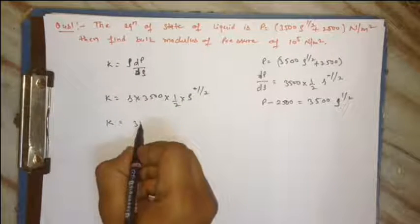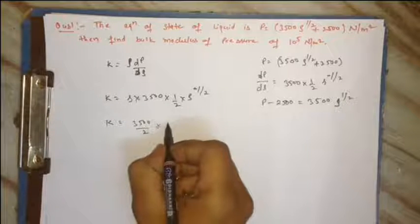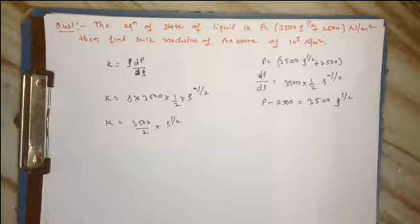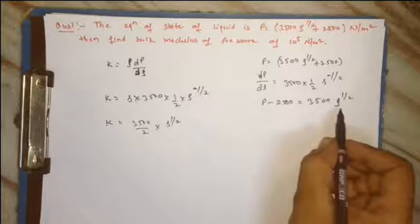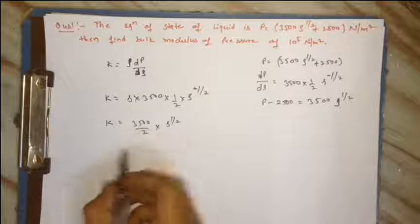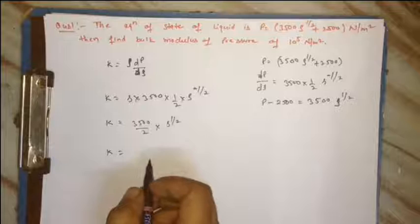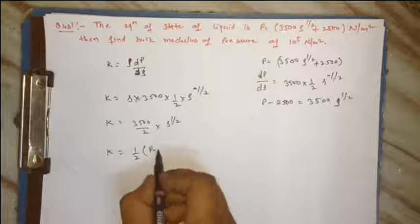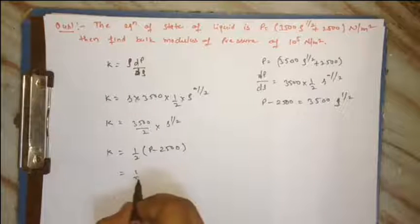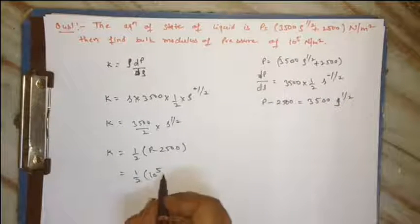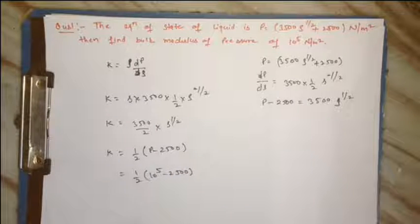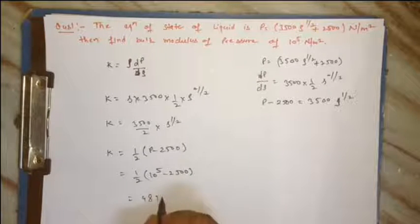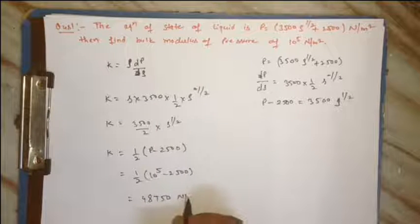K is equal to 3500ρ^(1/2) into ρ^(1/2). 3500 into ρ ki 1/2 ki value ka hai P minus 2500, aur P ki value humne kya de rakhi hai 10 raise to power 5 minus 2500. Thik hai yaha se K ki value nikal jaye gi 48750 newton per meter square.